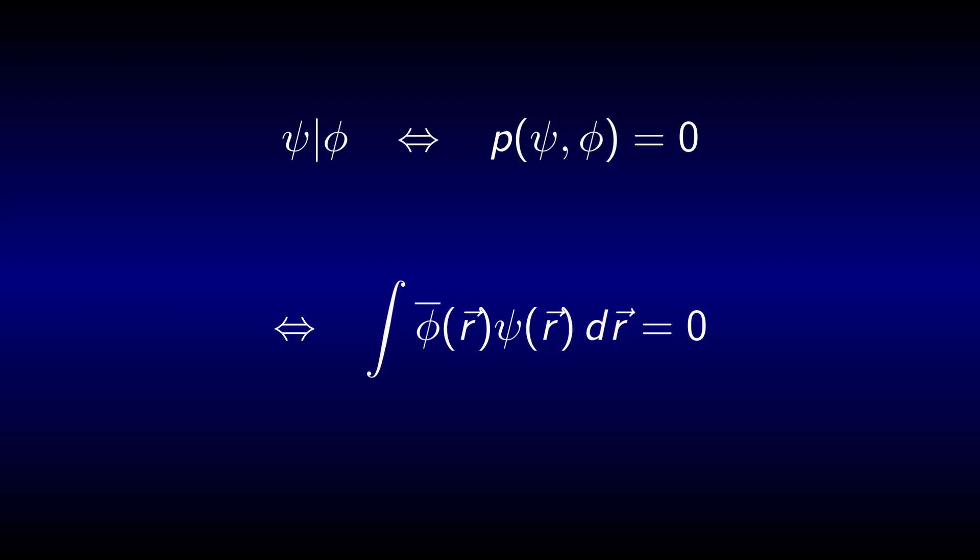Eigenvectors belonging to different eigenvalues are orthogonal to one another. After watching this video you should be able to prove that, but for now you can just believe me.